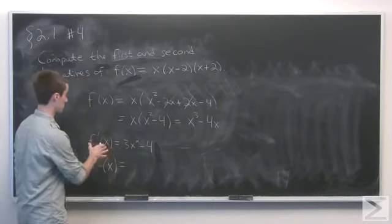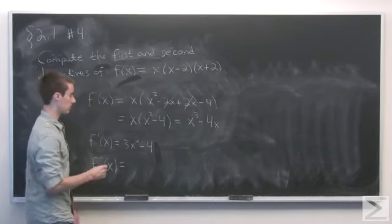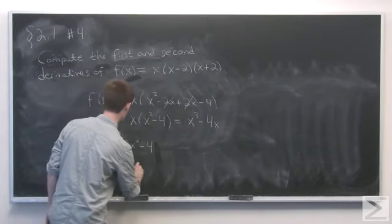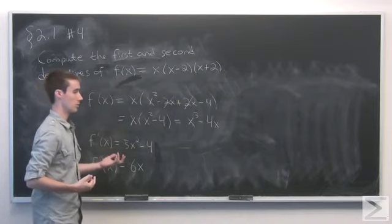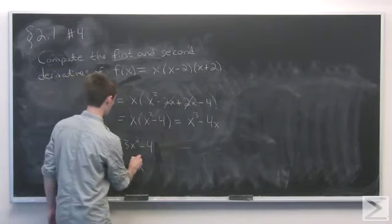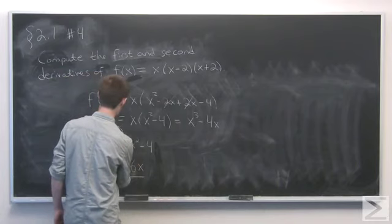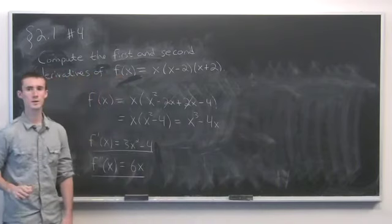Now for the second derivative, we just take the derivative of the first derivative. That becomes 6x, and the derivative of any constant is just 0, so f''(x) = 6x is our final answer.